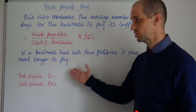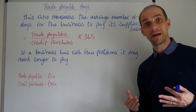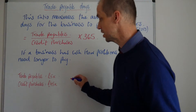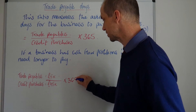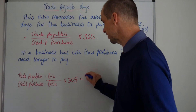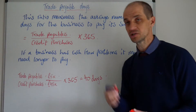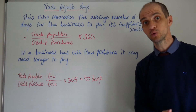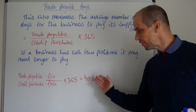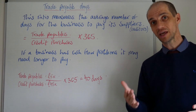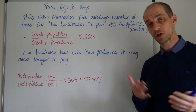Here's a simple calculation example: we've got trade payables of 5,000 and credit purchases of 45,000 for the year. If we take this information and multiply by 365, that gives us a figure of around 40 days. So that tells us this business is taking 40 days to actually pay its suppliers or creditors, and therefore if they're only getting credit terms of 28 or 30 days, this may suggest they have some cash flow difficulties.